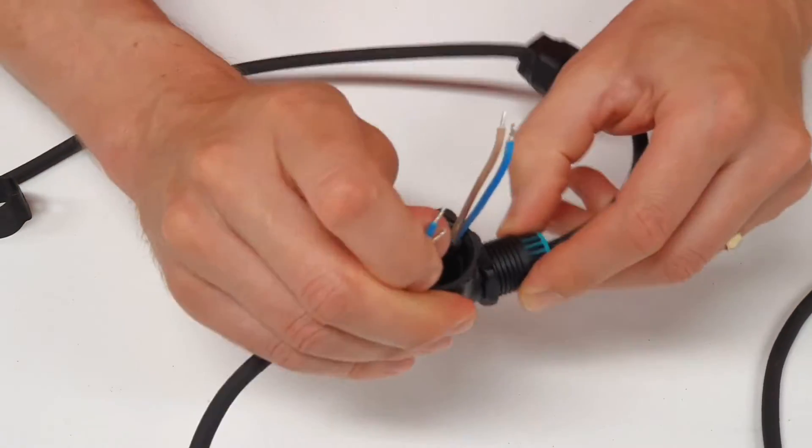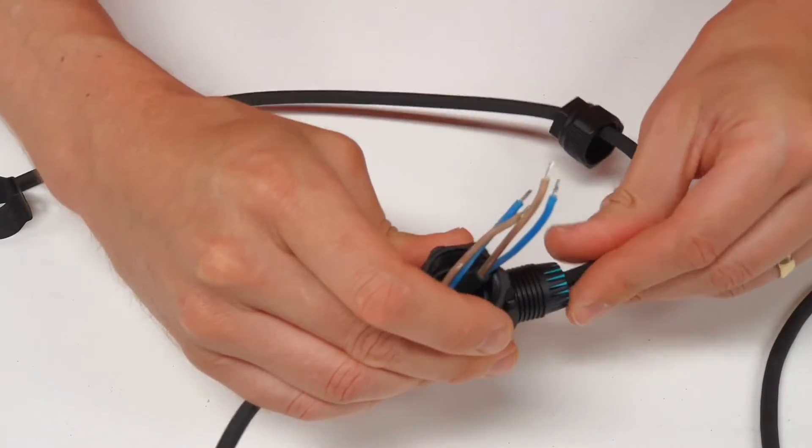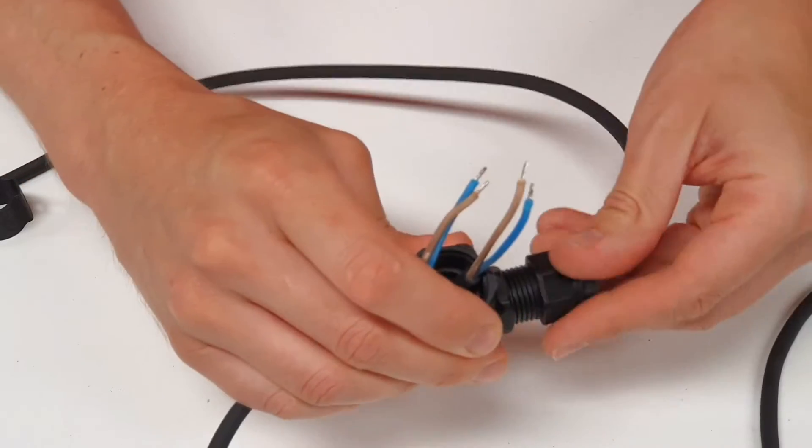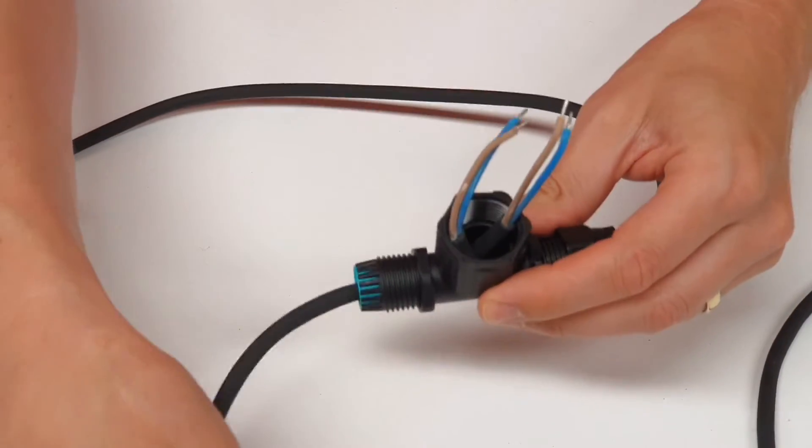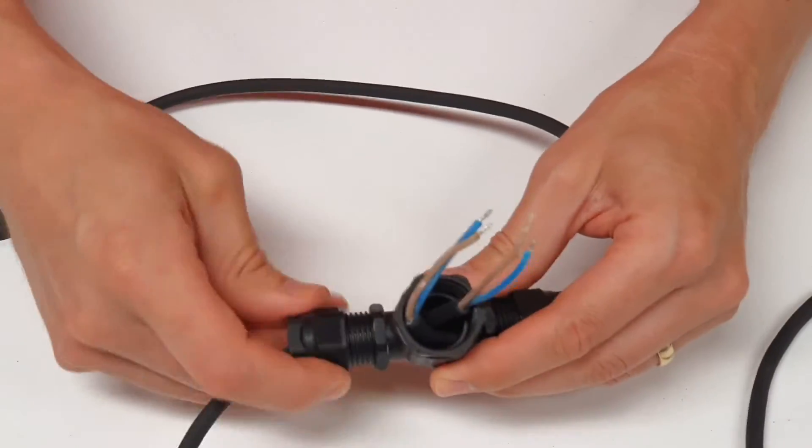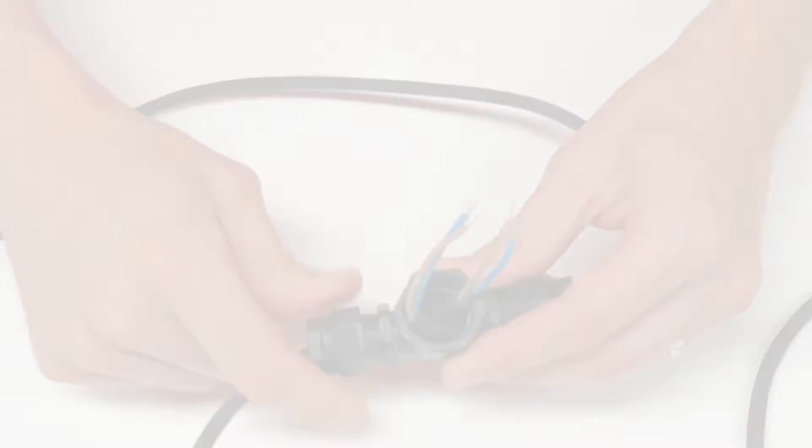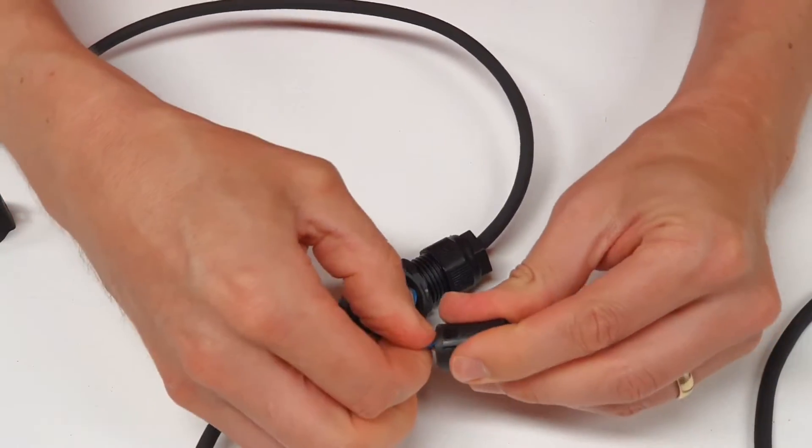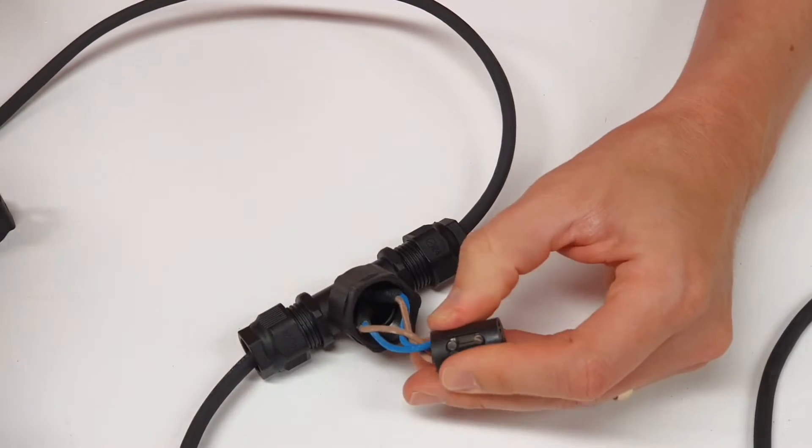So I've got the two cables coming in from both straight ends and I've stripped them as long as I can to make the terminations easier for myself while still making sure that the gland will grip the outer sheath of the cable. Then I simply connect the two conductors into the terminal and tighten up.